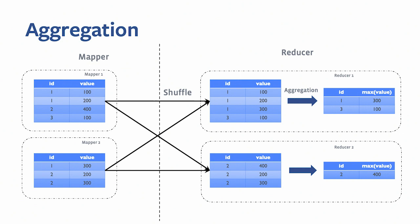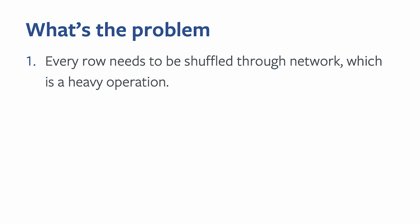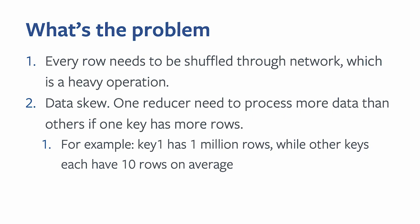The problem is that to perform aggregation, every row for the same key must be shuffled through the network — generally a heavy operation. We might also have data skew and data imbalance problems, because if one key has significantly more rows than others, the reducer processing that key takes longer and risks OOM errors.